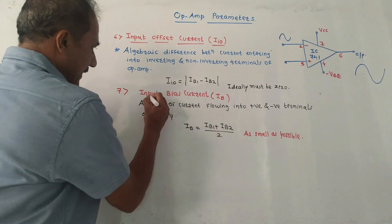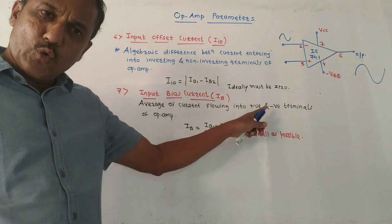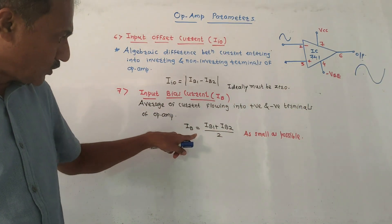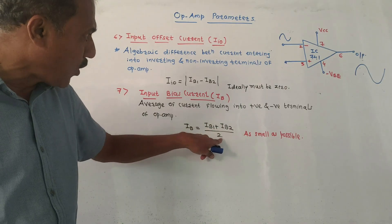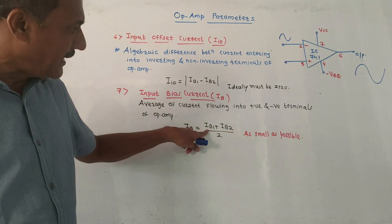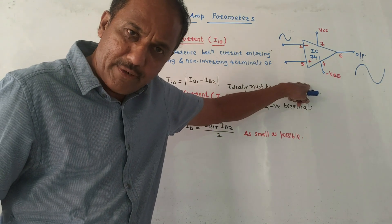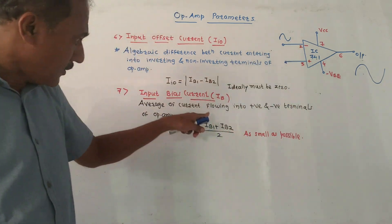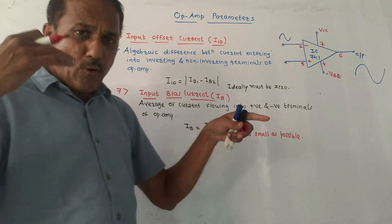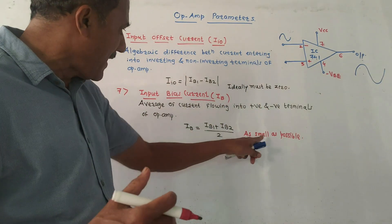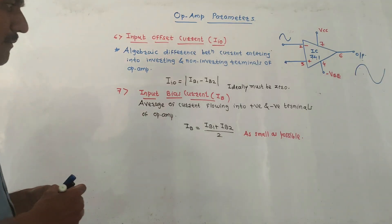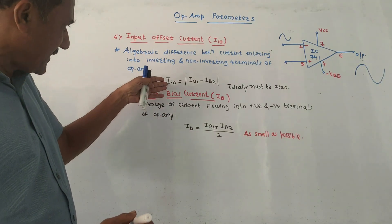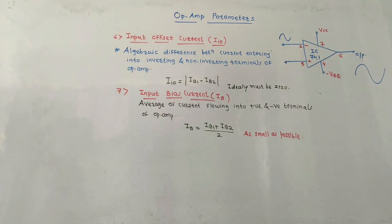The next parameter is input bias current. It is the average of the current flowing into the inverting and non-inverting terminals of the op-amp: (IB1 + IB2) / 2, where IB1 is the current entering the non-inverting terminal and IB2 is the current entering the inverting terminal. Ideally this value should be as small as possible, because in an ideal op-amp both input offset current and input bias current must be zero.